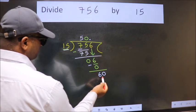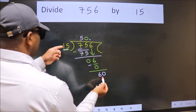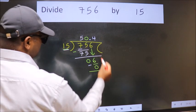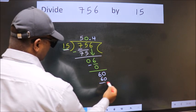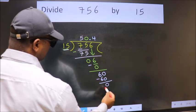So now we can put dot and take 0. So 60. When do we get 60? In 15 table is 15 fours, 60. Now we subtract.